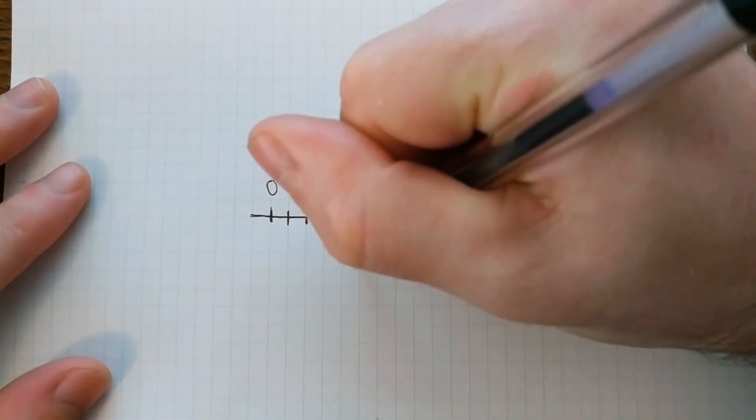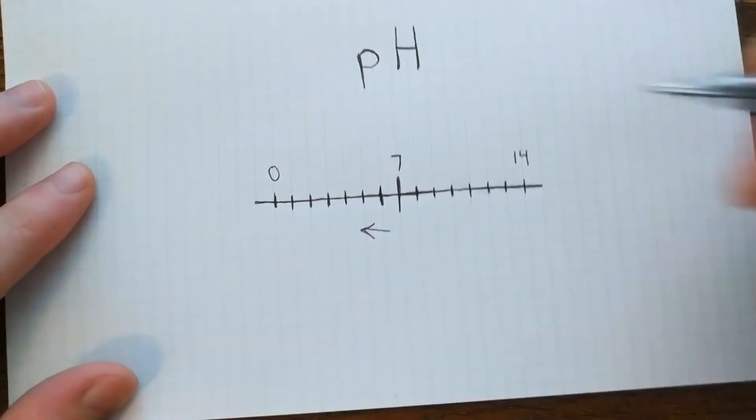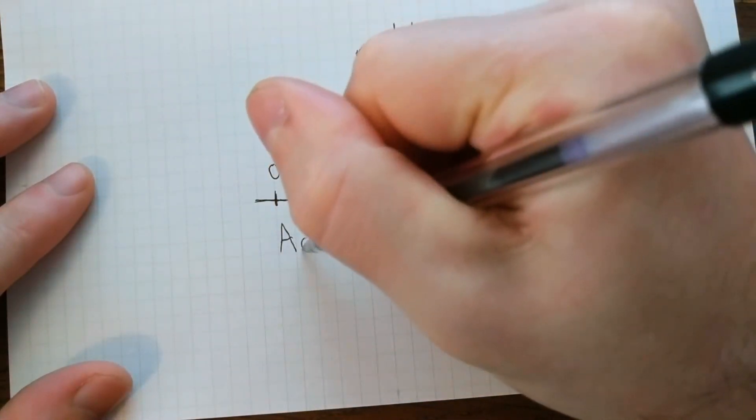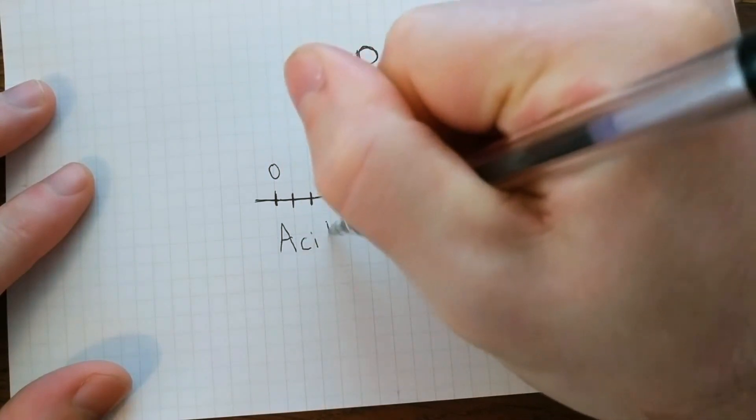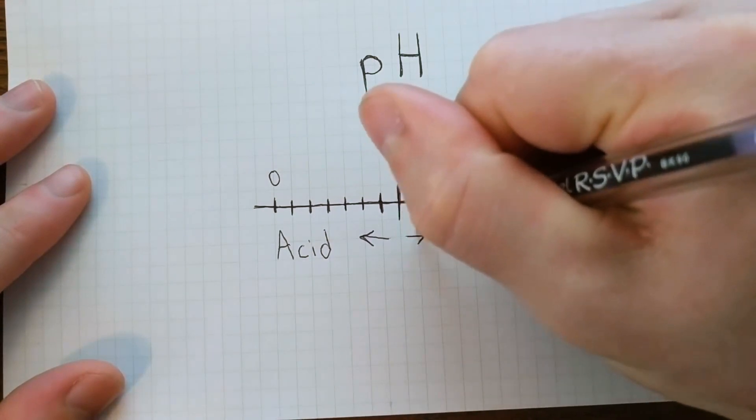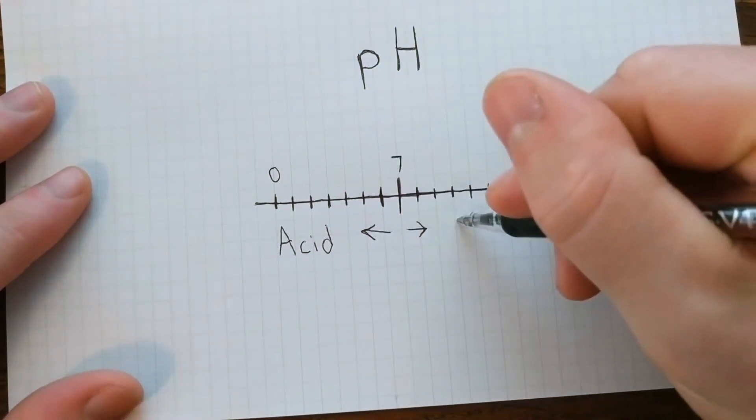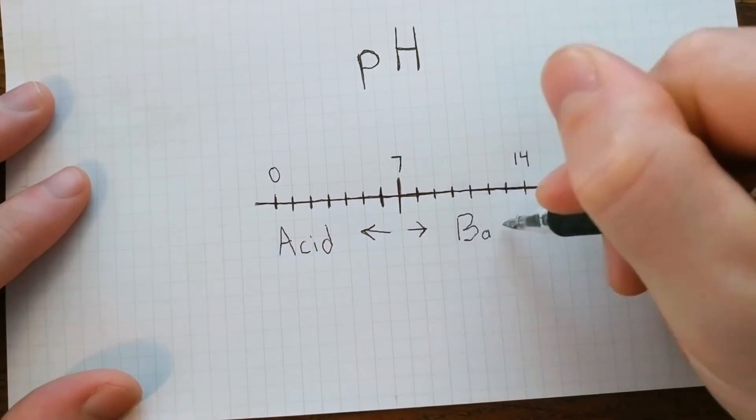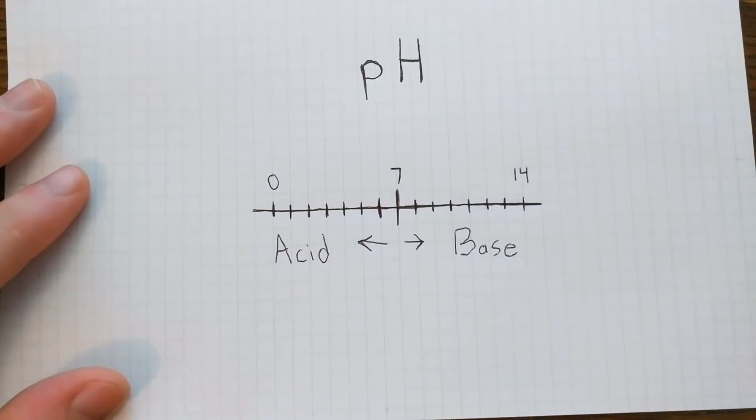Less than 7 would be on the acidic side of the scale, and the closer you get to 0, the more acidic the solution is. Something like vinegar or battery acid would be on this side of the scale. Greater than 7 would be on the alkaline or basic side of the scale. And the closer you get to 14, the more basic the solution is. Something like baking soda or lye would be on this side of the scale.